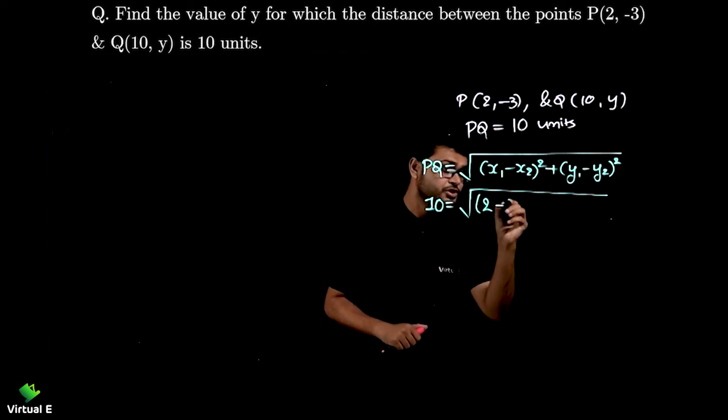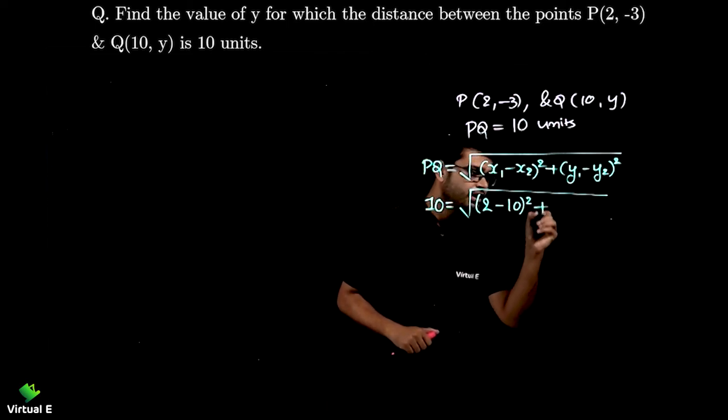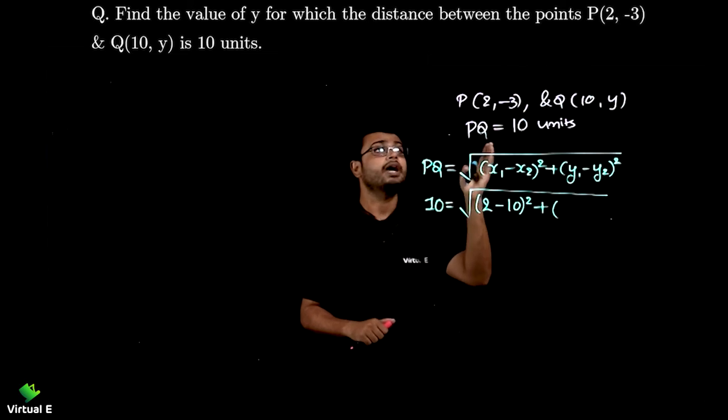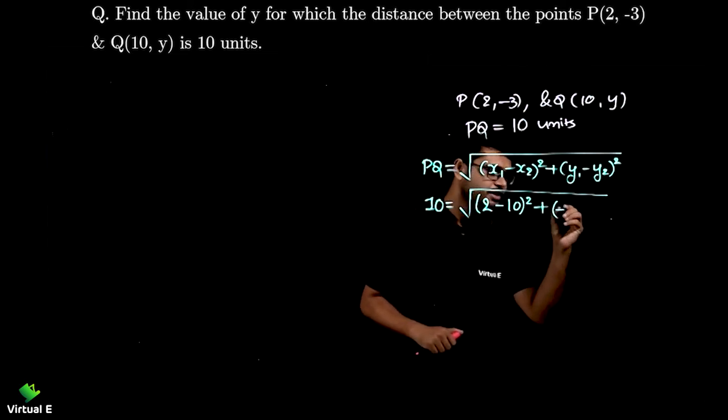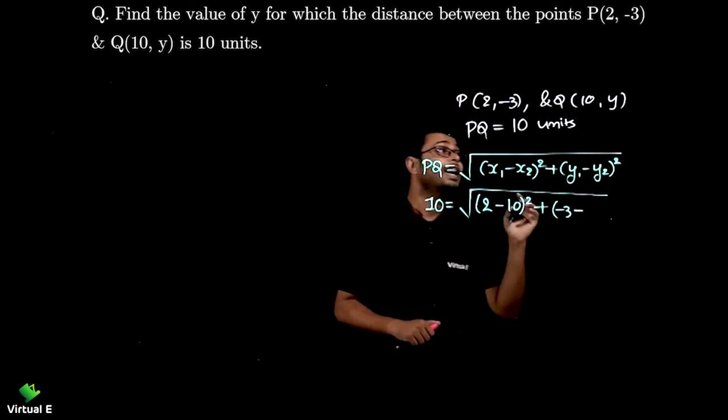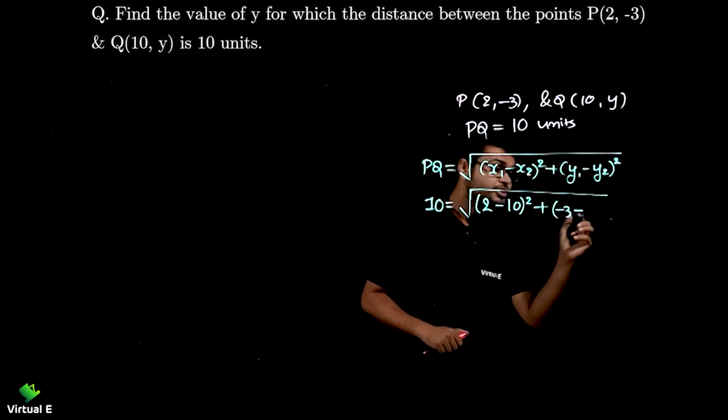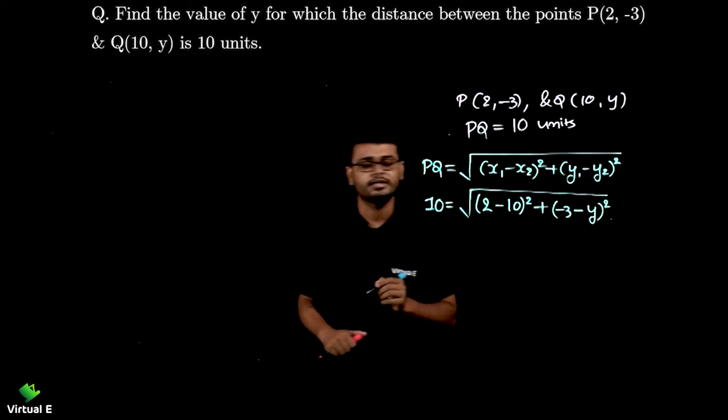So here 10 is equal to square root of x coordinate of P which is 2 minus x coordinate of Q which is 10 whole square. Then y₁, y coordinate of P which is -3 minus y coordinate of Q which is y that we don't know. We need to find it.